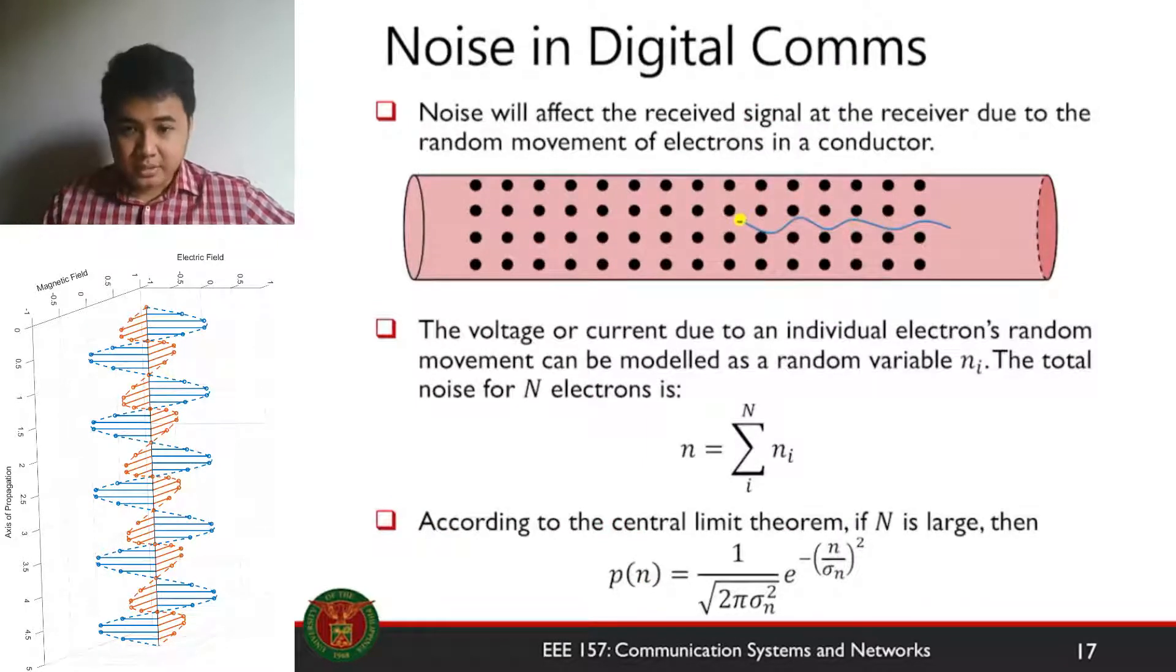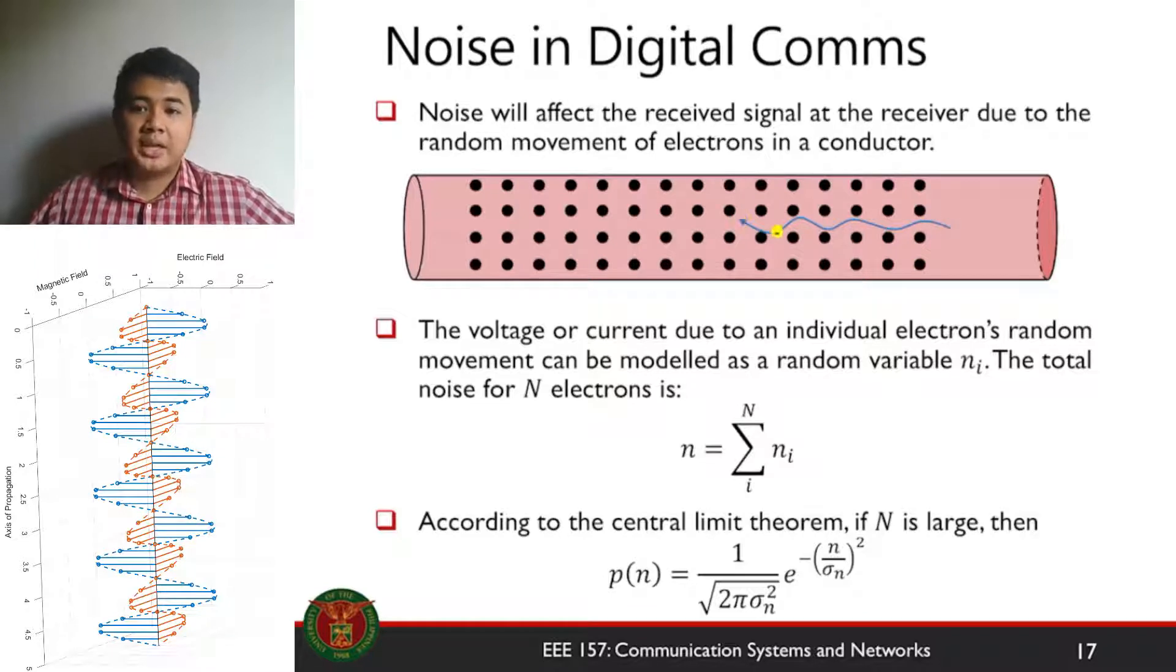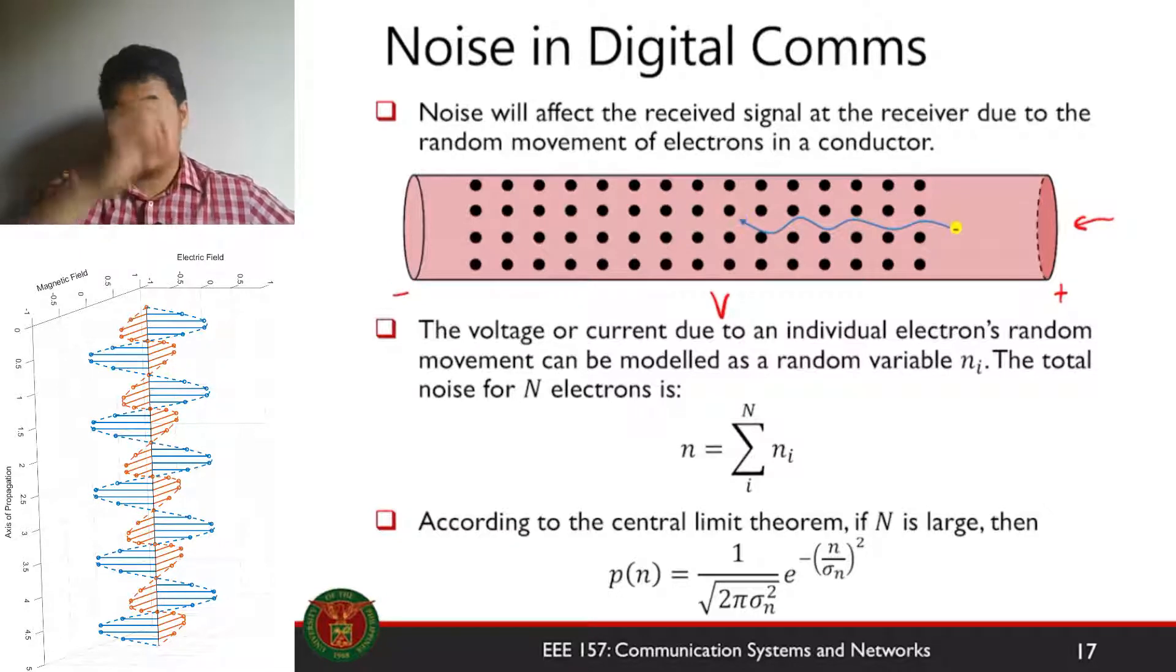So first things first, where does noise come from? From the previous lecture, we know that noise comes from the random movement of electrons in a conductor. The physics of it is that your electron will collide with different atoms as it moves along the conductor. This results into random movements with one mean movement based on the voltage applied.